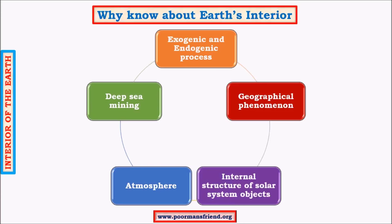There are various processes happening both above and within the surface of earth. These are divided into exogenic and endogenic processes. Exogenic or exogenetic processes happen on the surface, whereas endogenic processes happen within the surface. All these processes mainly have their origin in forces that come from deep inside the earth. For example, volcanic eruptions are exogenic processes but their energy comes from deep inside the earth.